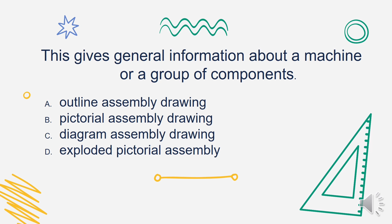Next: which type of drawing gives general information about a machine or a group of components? Is it A. Outline Assembly Drawing, B. Pictorial Assembly Drawing, C. Diagram Assembly Drawing, or D. Exploded Pictorial Assembly? The answer is Letter C. Diagram Assembly Drawing.